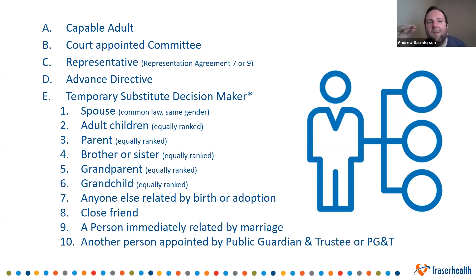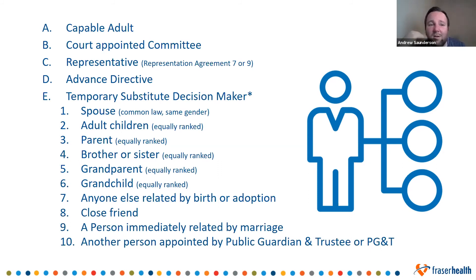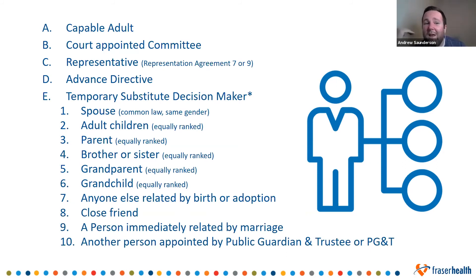Look at this list: the first person they're going to go to in my situation about whether to do surgery on my leg is my spouse — and spouse can be common law or same gender. In my case my spouse is typically busy with our toddler and not easily available by phone. So they go to my adult children — but I don't have any adult children; mine are two and seven. Then to my parents, who are also often unavailable. So suddenly we're now to my brothers and sisters. Notice that you may not have expected your brother or sister was going to be the one making the decision for you. From number two to six, we've got adult children, parent, brother or sister, grandparent, and grandchild — notice it says 'equally ranked' beside those.